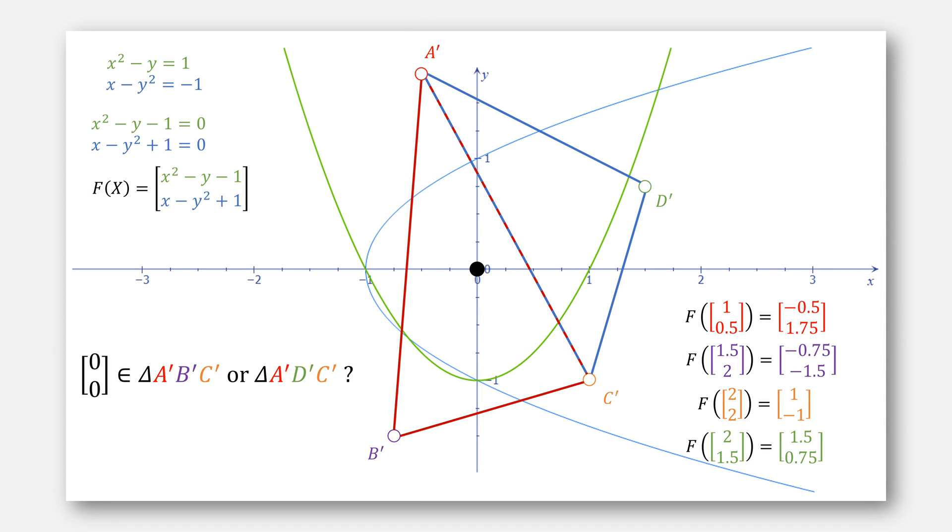Regardless of the test, we know that our point 0, 0 is in the triangle A', B', C', which maps back to A, B, and C.